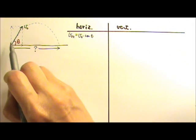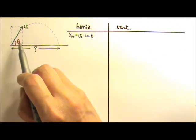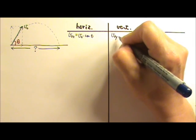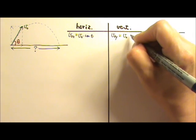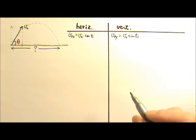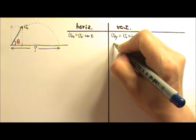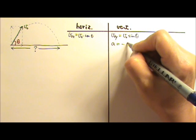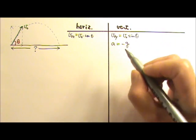The vertical component is the same as the opposite side. So the vertical component is the sine component. Again, on the vertical side we know acceleration is negative G and we are just going to keep G as G.